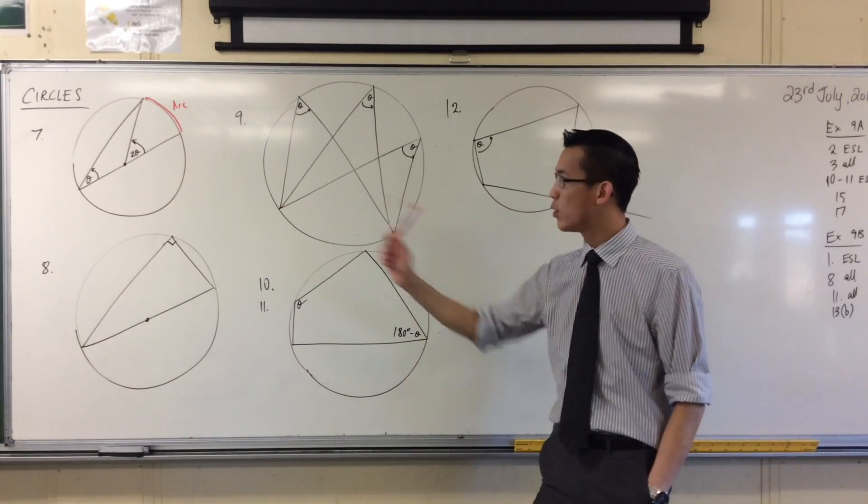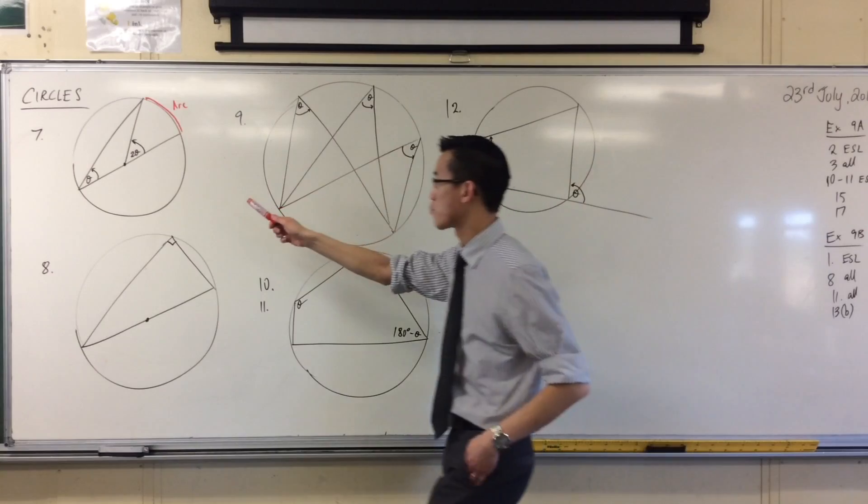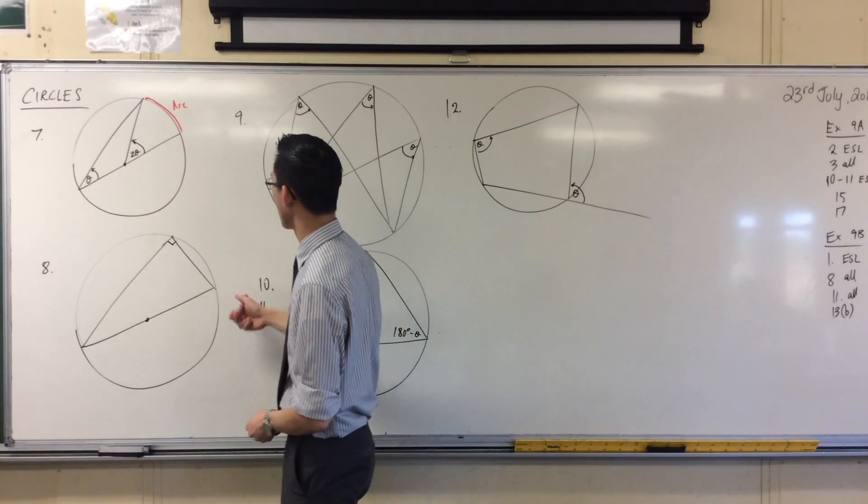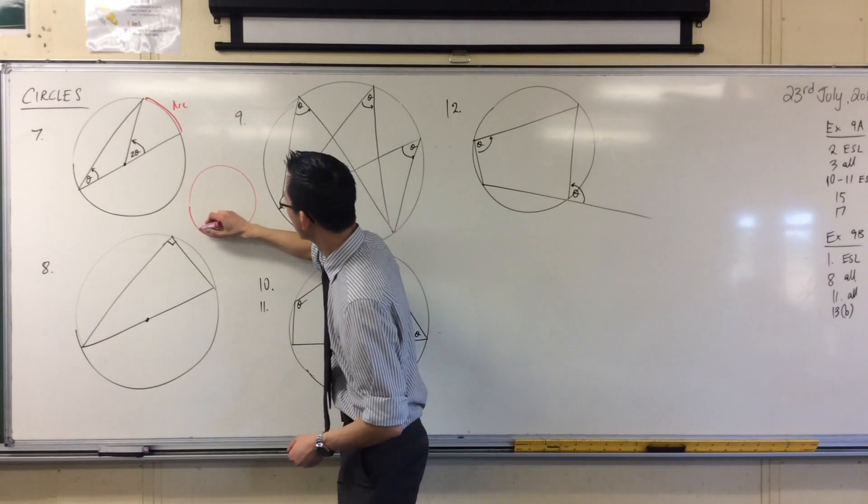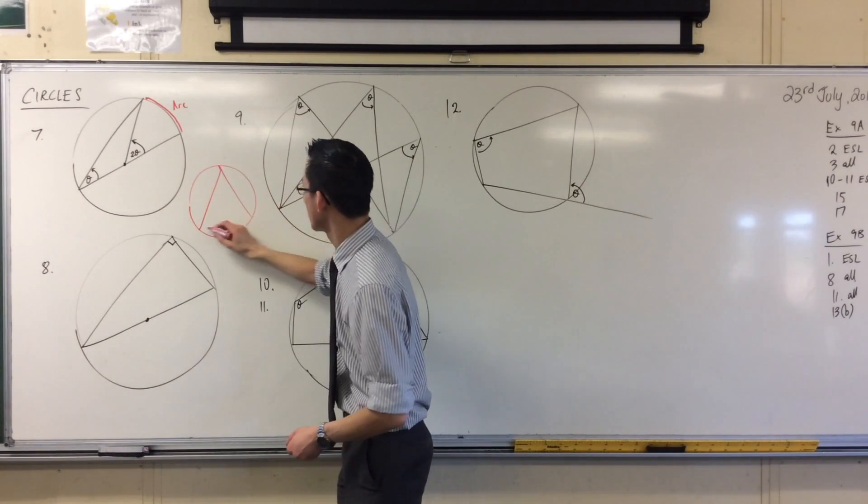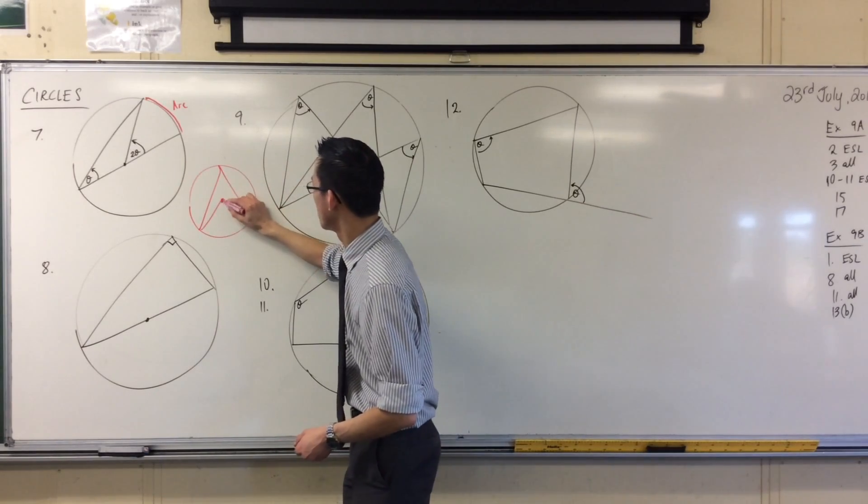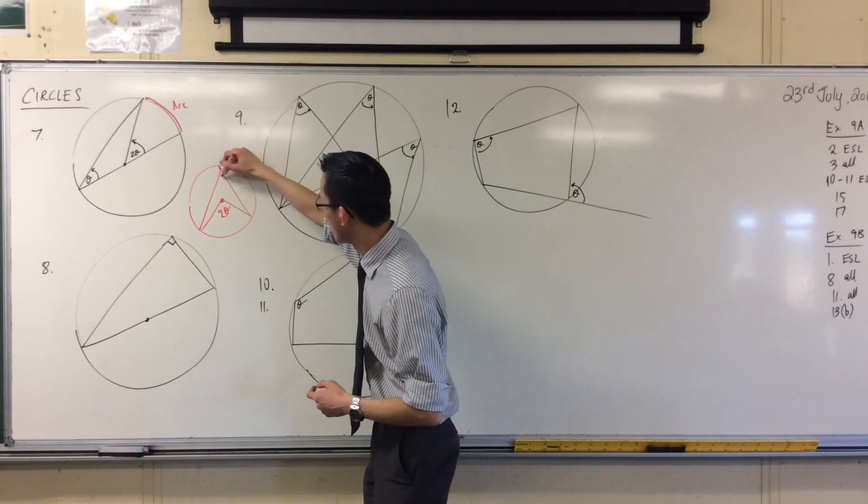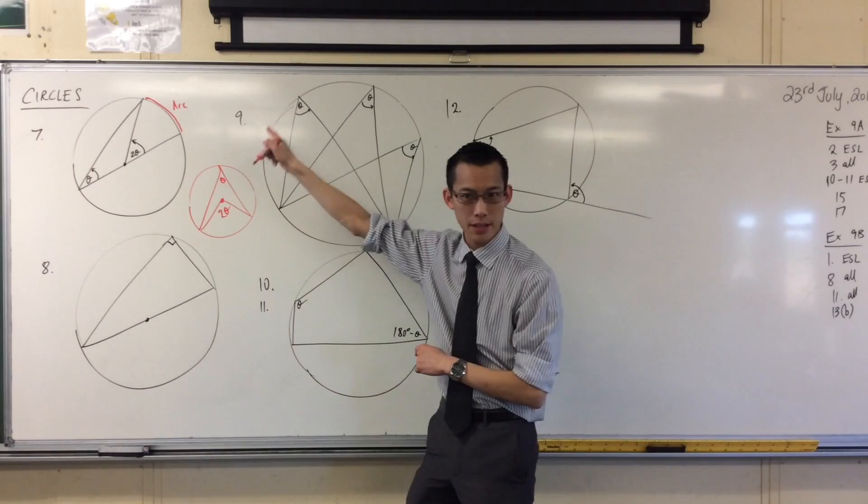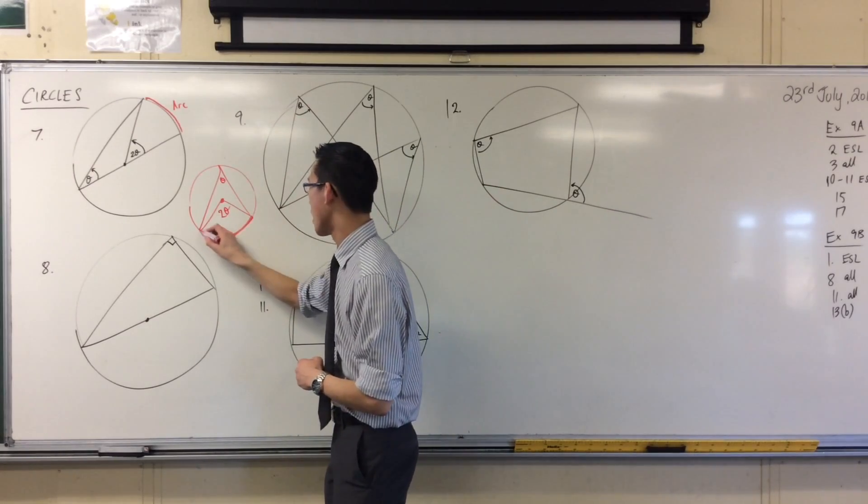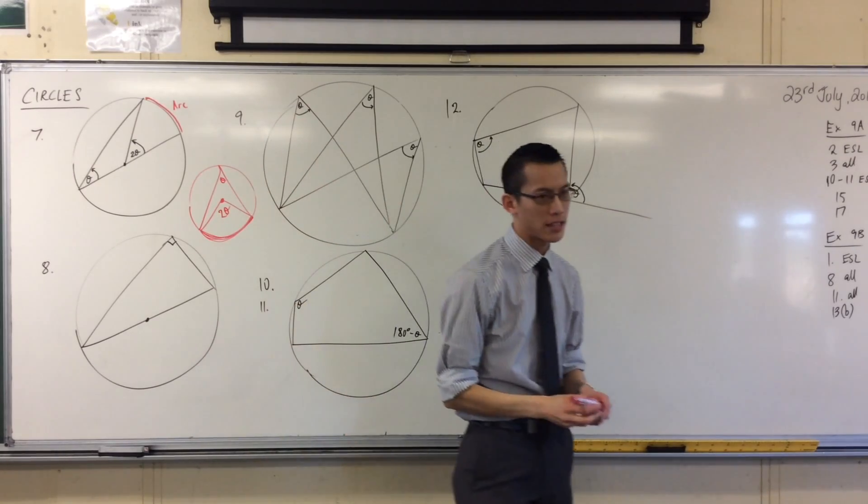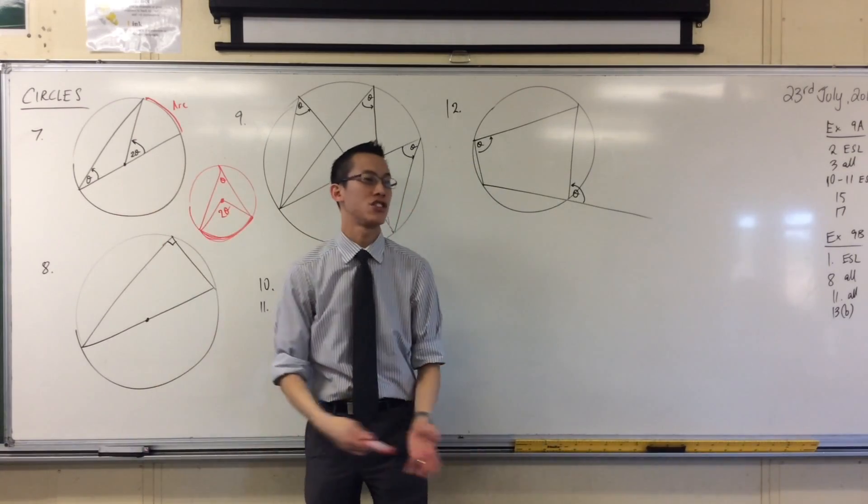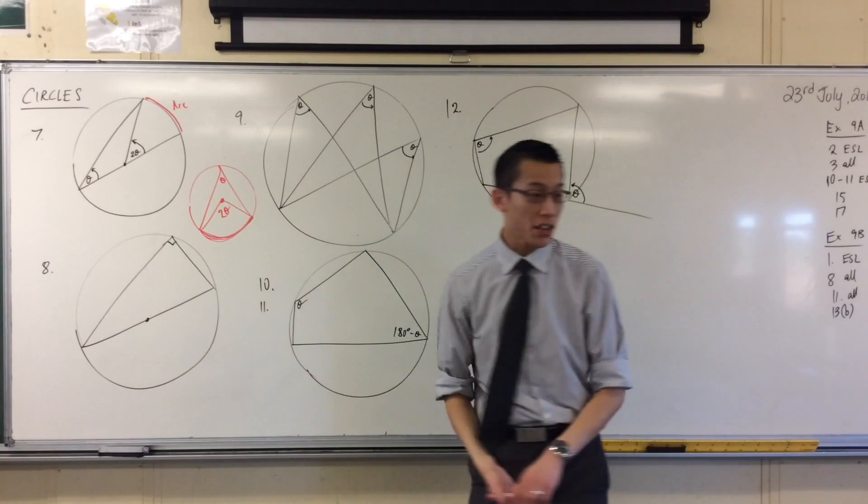Now, how would you go about proving this? It's worth mentioning that for this particular property, you can actually draw different diagrams to represent this. For example, here's another one. Angle at, there you go. So this is the same situation, right? I've got an angle at the center, which is double the angle at the circumference, standing on the same arc. So the proof I'm about to give you doesn't quite exactly work for this, even though it works for this, because the configuration is slightly different. But it's not that hard.